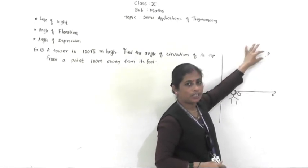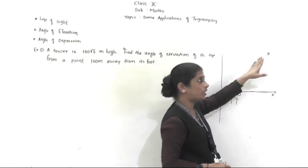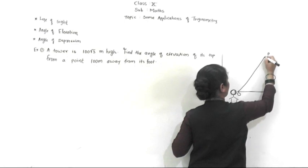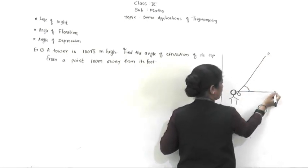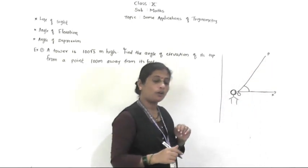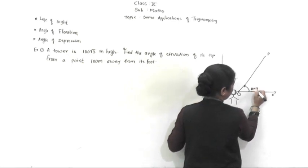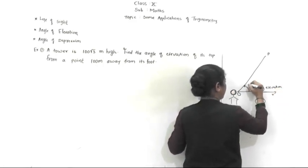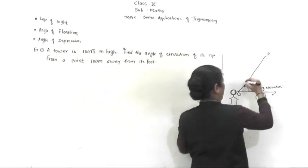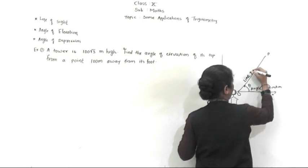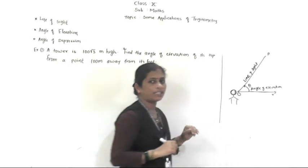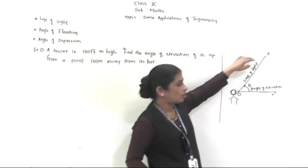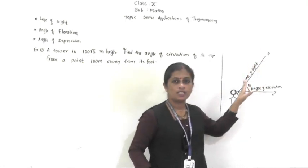Our object is here at point P. To see this object at point P, the angle the eye moves through is called the angle of elevation. So angle XOP is called the angle of elevation, denoted by theta. And OP is called the line of sight — the line from the eyes of the observer to the object under consideration.